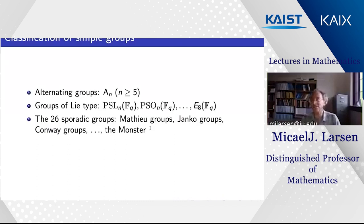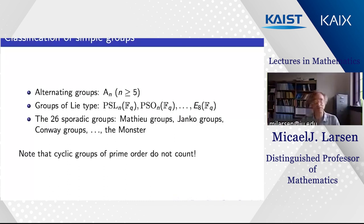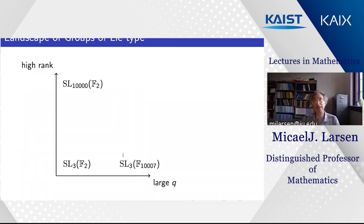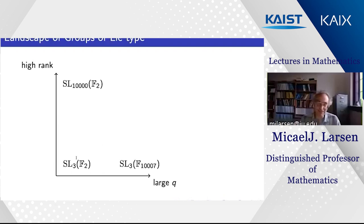We do not consider cyclic groups of prime order to be simple groups in this context — the theory of word equations over them is trivial. Looking at the landscape of groups of Lie type gives a two-dimensional picture: one axis fixes the type (e.g., SL₃) and varies the field, growing the group; the other fixes the field (e.g., 𝔽₂) and grows the dimension. Algebraic geometry has something to say about the horizontal direction but not the vertical one.